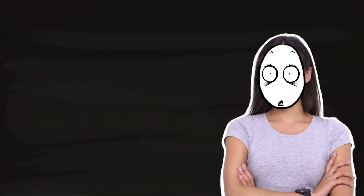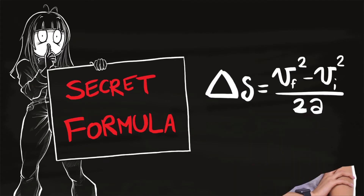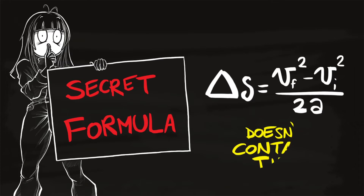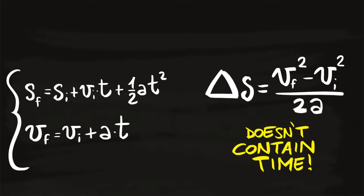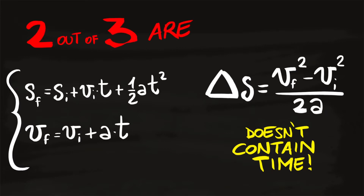There is also a third secret formula: Δs equals (vf² - vi²) / (2a). This formula is great when you don't want or can't use time. You can use it in place of one of the two laws of motion. In most cases, two of these three equations are more than enough to solve problems — choose which ones to use based on your known data.